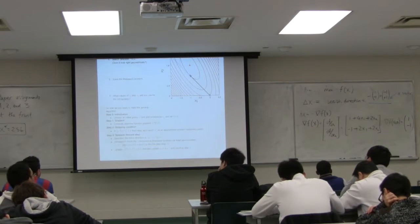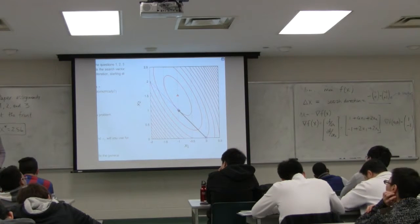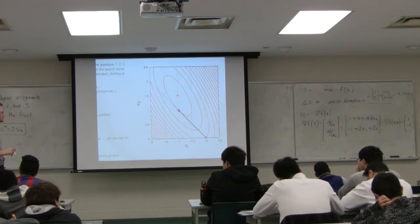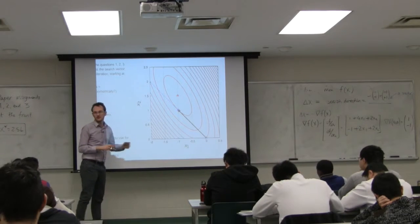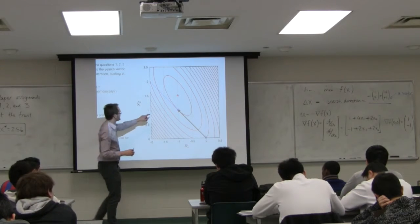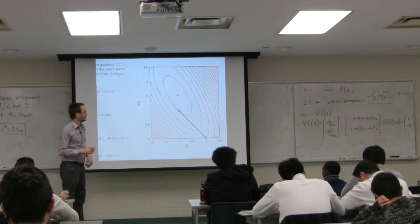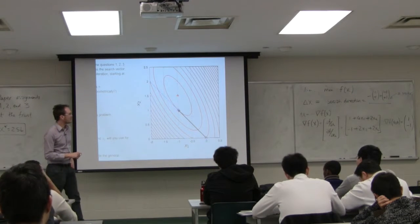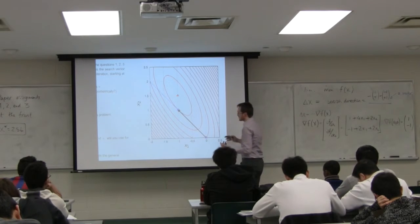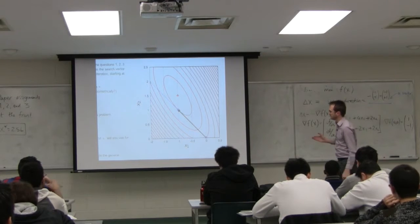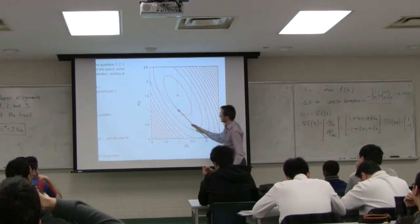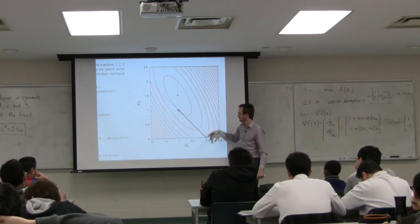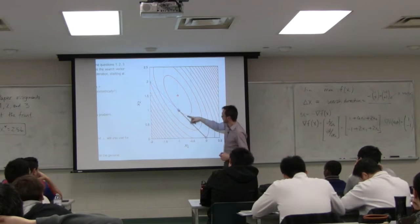The search direction is found by evaluating that partial derivative function at our current location (0, 0). Substituting in: delta F at (0, 0) is equal to [1, −1]. Therefore our search direction delta x equals the negative of that, so [−1, +1]. Let's verify geometrically: the contour lines are shown in red, with the minimum at the triangle point. Our current guess is (0, 0) — that blue circle at the bottom of the graph. Search directions go perpendicular to the contour lines, and we can observe that here.